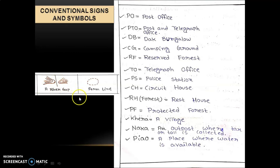The next symbol is form line, which is also a type of contour line. When the relief of an area is so inaccessible and complicated that assessment of its accurate height is not possible, contours are drawn as broken brown lines to show only the general pattern of the ground without giving a definite idea of actual ground height. That is a form line.